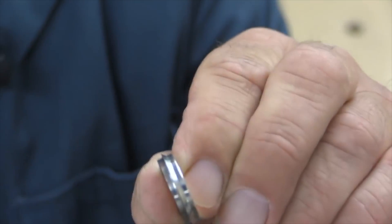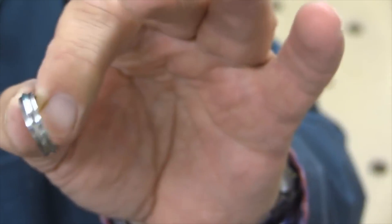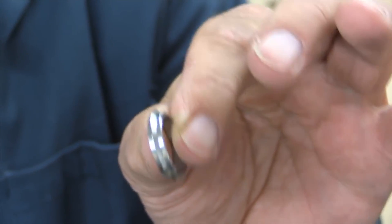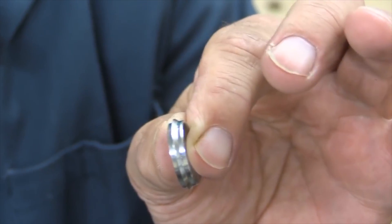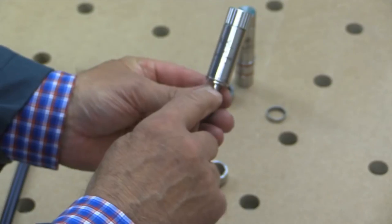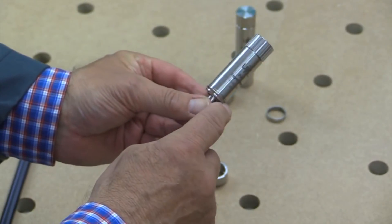That chamfer is going to be used to help locate this very accurately in your bench top and I'll show you how to do that very shortly. That chamfer is on the lower side there.